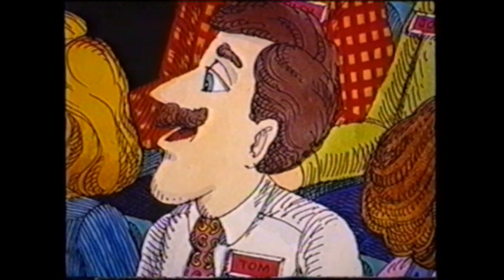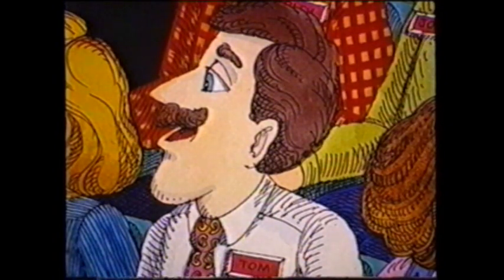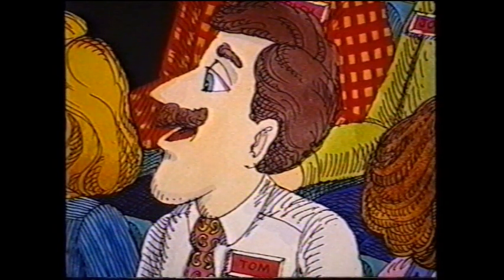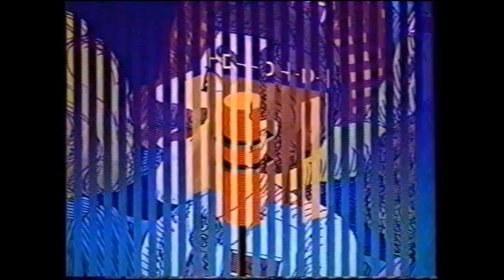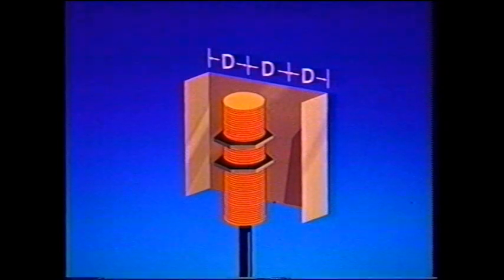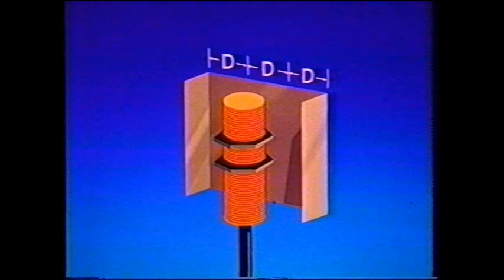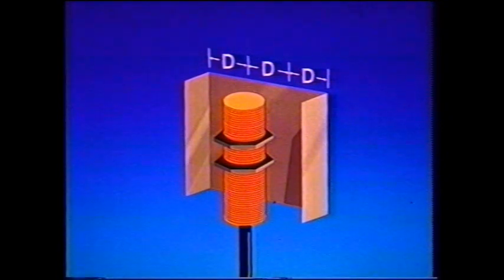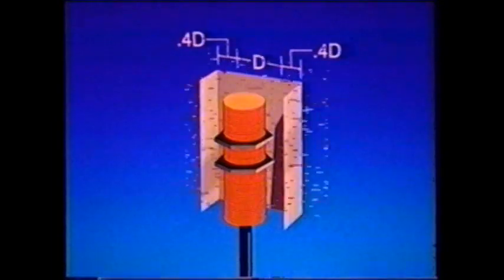Can you locate an aluminum guard closer than a steel guard? That's exactly right. Here's a switch with a steel guard — the metal-free zone must be equal to the diameter of the switch. If that guard is made of aluminum, the metal-free zone can be as small as 40% of the diameter.